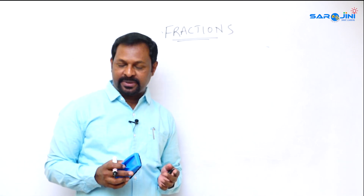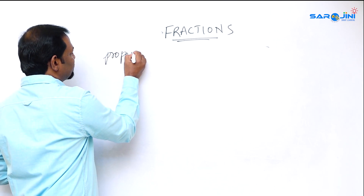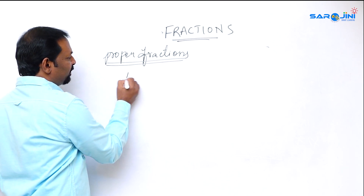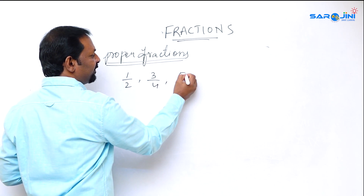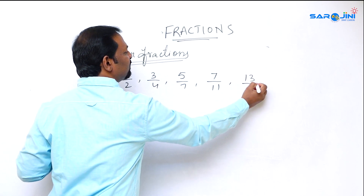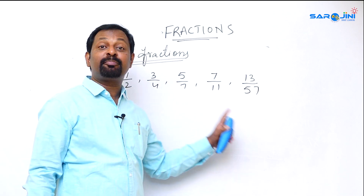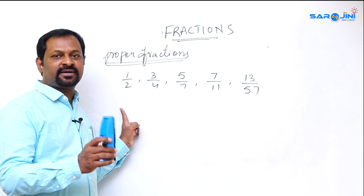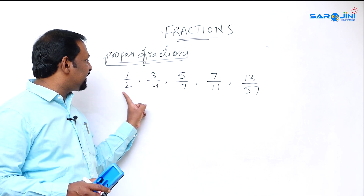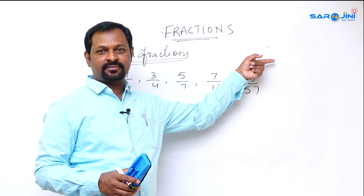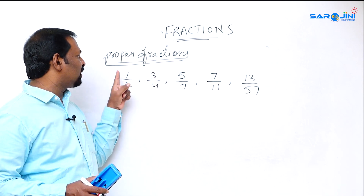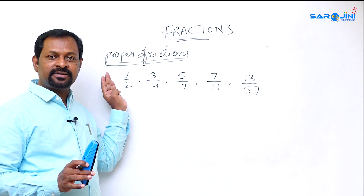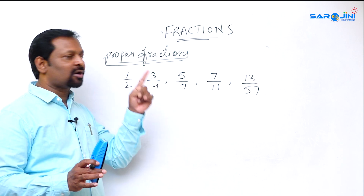Within fractions there are different types. First, we talk about proper fractions. Examples are one by two, three by four, five by seven, seven by eleven, or thirteen by fifty-seven. In a proper fraction, the denominator is always greater than the numerator — or put another way, the numerator is less than the denominator.